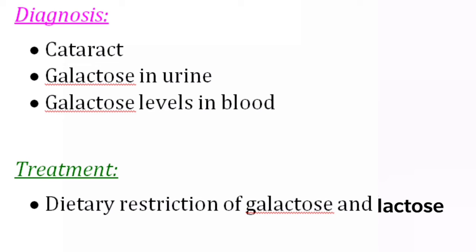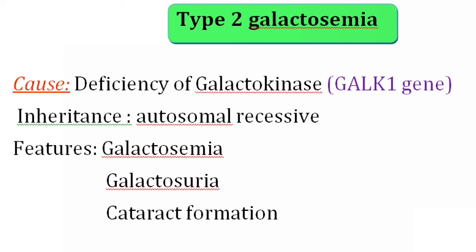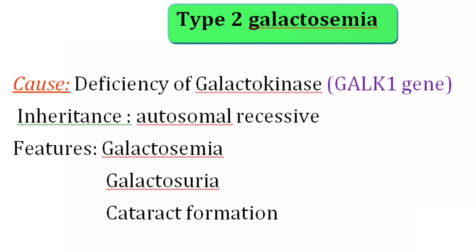Coming to type 2 galactosemia, the cause is deficiency of galactokinase. A mutation in the GALK1 gene, which codes for galactokinase, leads to type 2 galactosemia. This is also inherited as an autosomal recessive condition. The features include galactosemia, excretion of galactose in the urine, and cataract formation. However, it is a milder condition compared to type 1, because the toxic compound galactose-1-phosphate is not formed — only galactose accumulates.